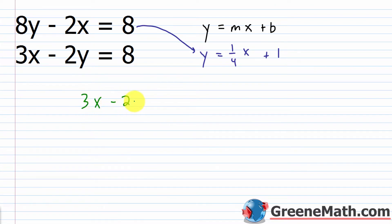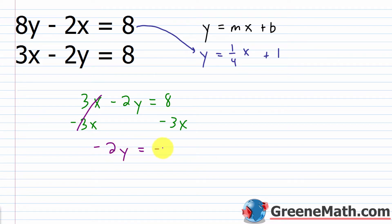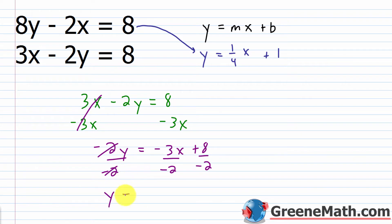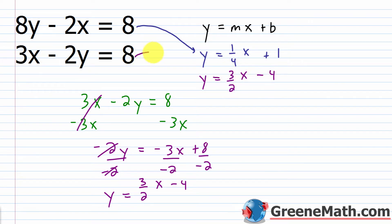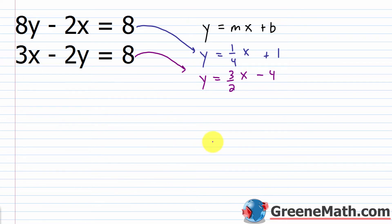For 3x minus 2y equals 8: subtract 3x from both sides to get negative 2y equals negative 3x plus 8, then divide by negative 2 to get y equals three-halves x minus 4. Now both equations are in slope-intercept form, making them very easy to graph.